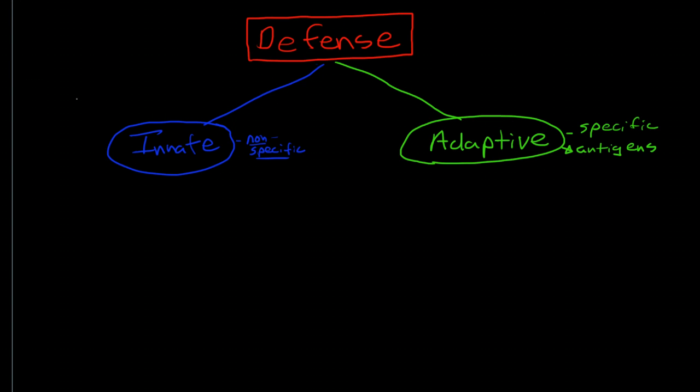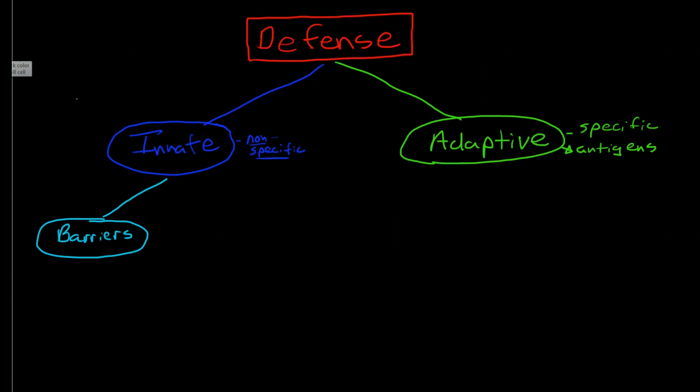The innate immune system is subdivided into two broad categories: one would be the barrier defenses and the other one would be what's called the innate immune system.